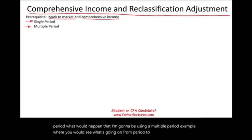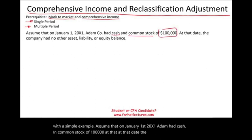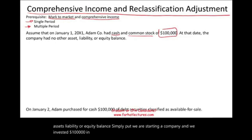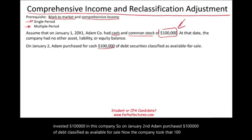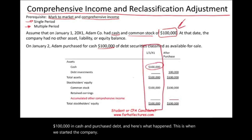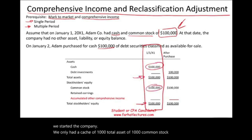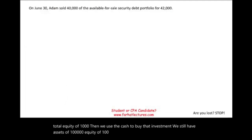Assume that on January 1st, 20X1, Adam had cash and common stock of $100,000. The company had no other assets, liabilities, or equity balances — we are simply starting a company with $100,000 invested. On January 2nd, Adam purchased $100,000 of debt securities classified as available-for-sale, using the cash. Assets remain $100,000 and equity remains $100,000.